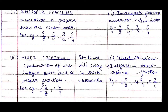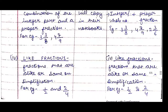Then come mixed fractions — a combination of an integer and a proper fraction. For example, 3 and 3/8: three is the integer and 3/8 is the proper fraction; together they form a mixed fraction. Another example is 4 and 7/9. Students will copy in their notebooks and we write on the board: integer plus proper fraction, with examples.